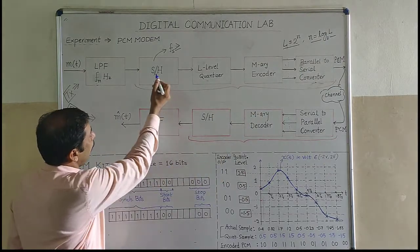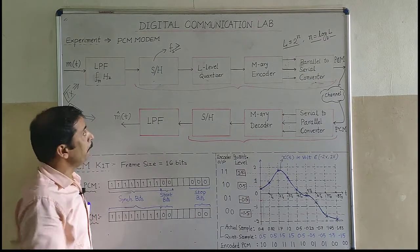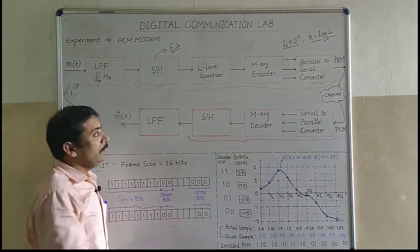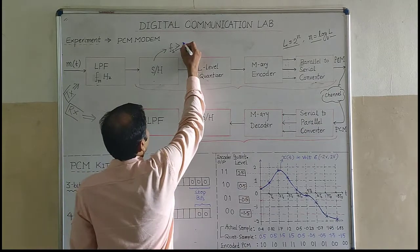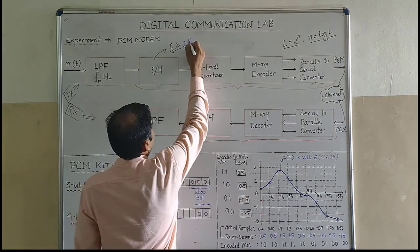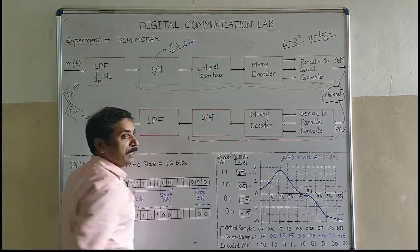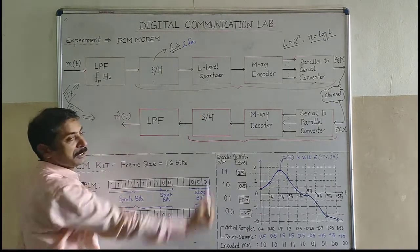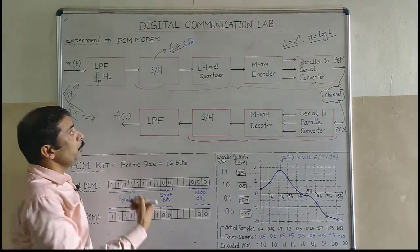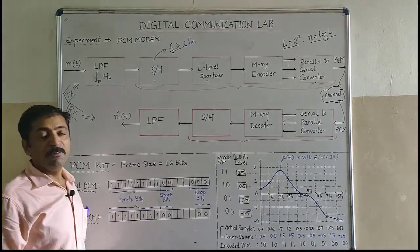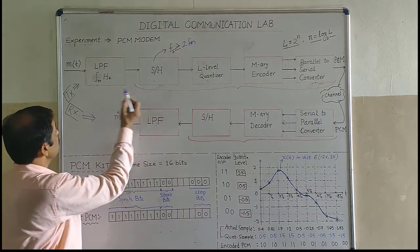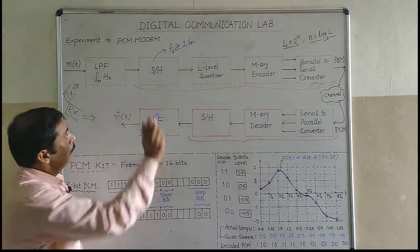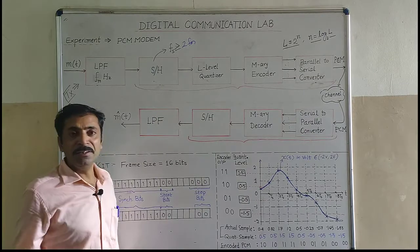The first step is sampling. I am using the sampling frequency FS, and it has to be greater than twice FM. As per the Nyquist criteria, the sampling frequency must be greater than or equal to twice FM, where FM is the maximum frequency component present in the input signal. Once sampling is done, I have to go for quantization.